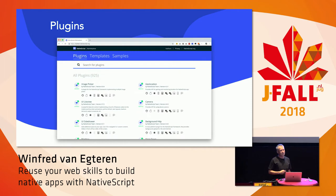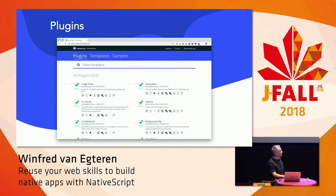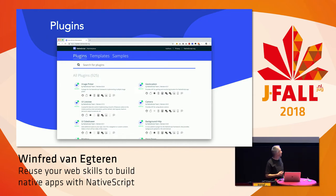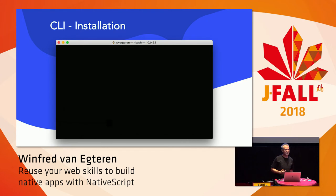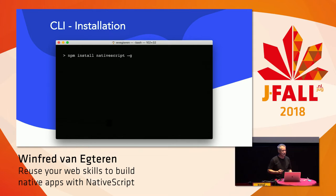You probably don't have to write a plugin yourself because there are many plugins already available. On the NativeScript Marketplace you can find a plugin for every purpose, and if you want to write your own, there are so many examples to learn from — it's not hard, but probably you won't need it. To install the CLI, it's just the same as always: npm install nativescript -g, and that globally installs the CLI.